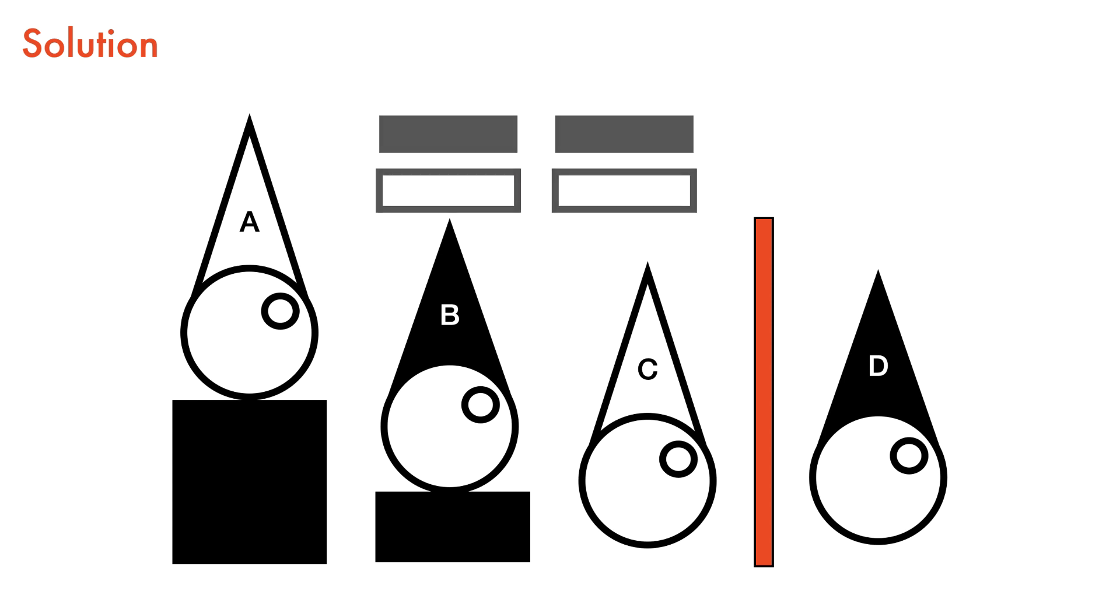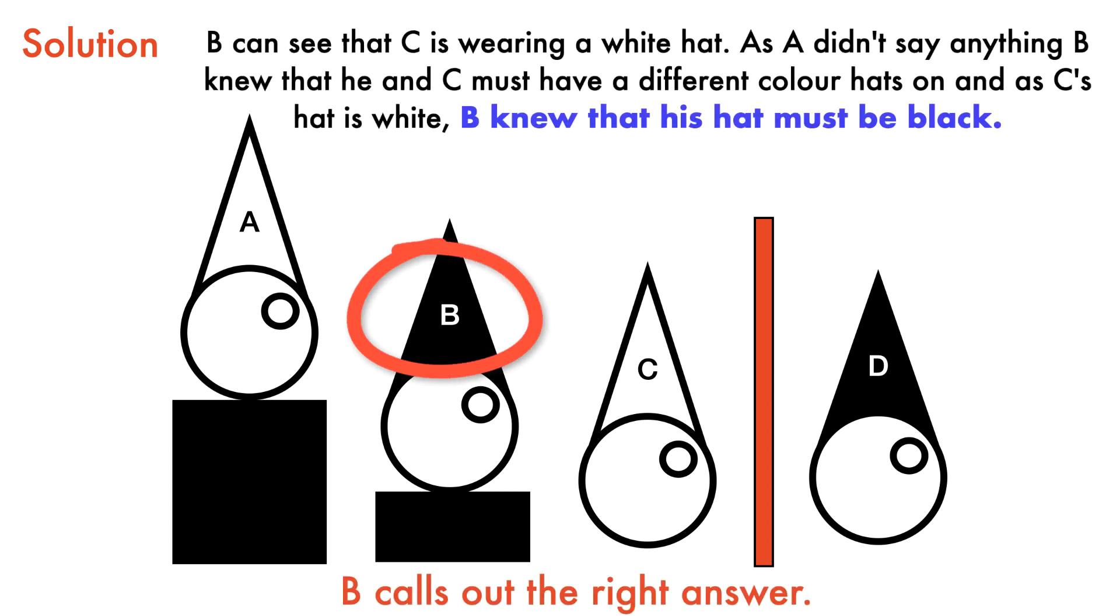B can see that C is wearing a white hat. If B was wearing a white hat too, then A would have seen two white hats and would have known that his hat was black. As A didn't say anything, B knew that he and C must have different color hats on.